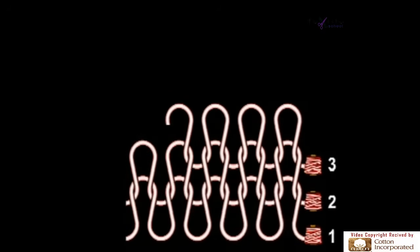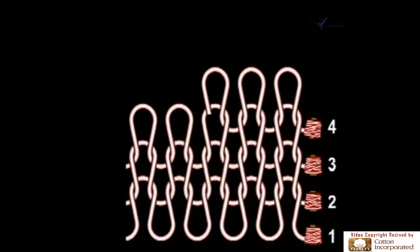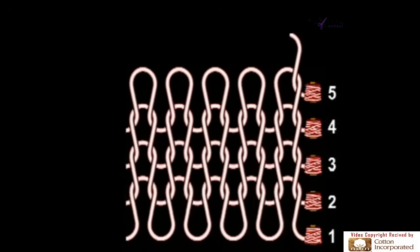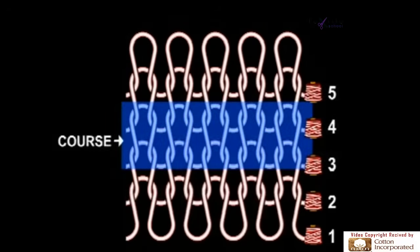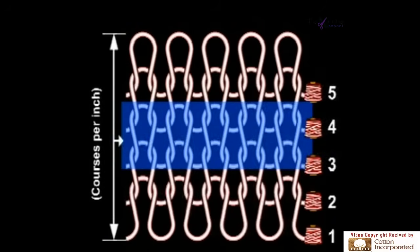If you analyze the structure, you see a pattern of loops arranged in rows and columns. The horizontal row of loops, produced by adjacent needles during the same knitting cycle, is known as a course. The course count is measured by the number of courses per linear unit, expressed as inches or centimeters. If this drawing represents a one inch by one inch area, you identify this as five courses per inch.